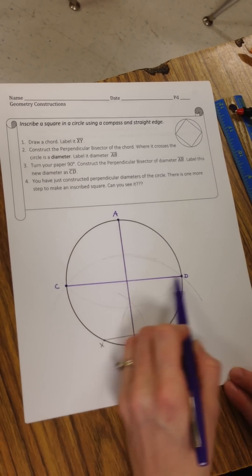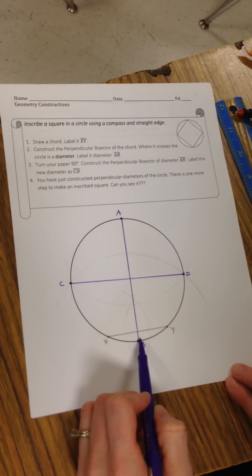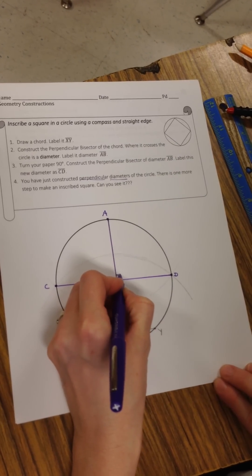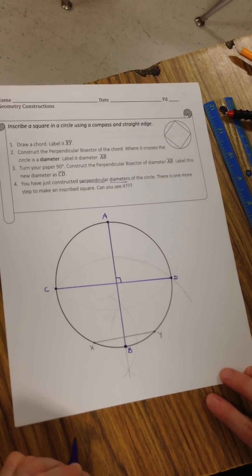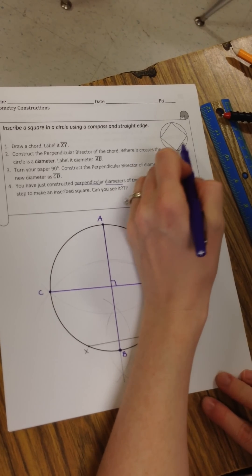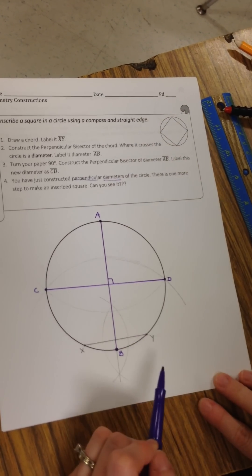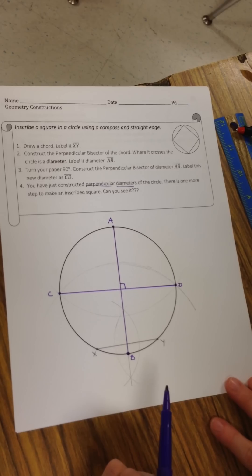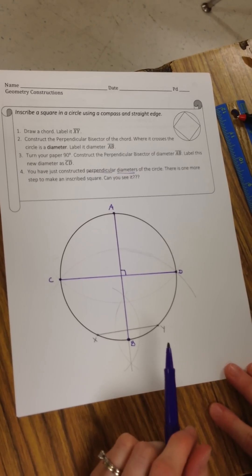So what we've just created are two diameters, but they're very special. They're perpendicular diameters. So there's a right angle right here. We're going to stop right there. You don't actually have the square yet, but you're almost there. Can you see what we need to do to make that square? Talk with your group members and figure out how you can make that square.